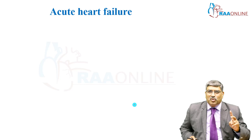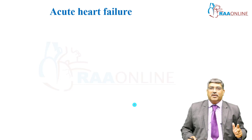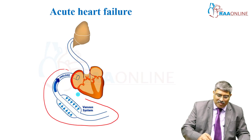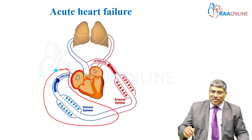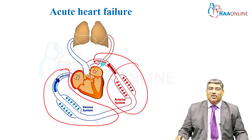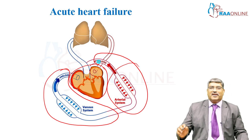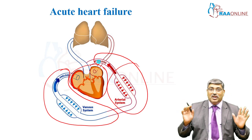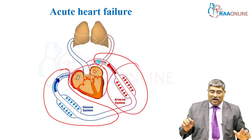There are three most important variables to consider. One is preload — your volume management can aggravate heart failure. Another is systemic vascular resistance, your afterload. And the third is contractility. All three can play a major role in the perioperative period in precipitating heart failure.